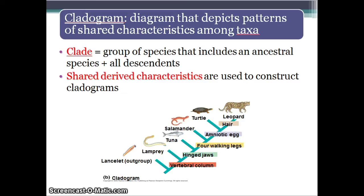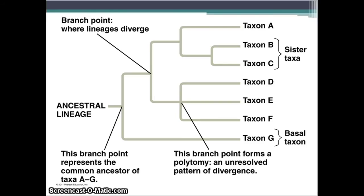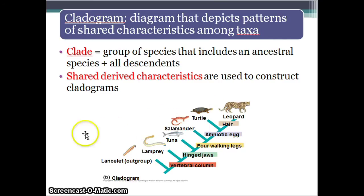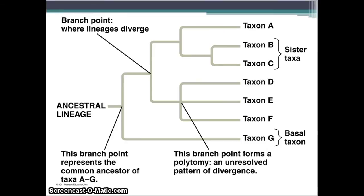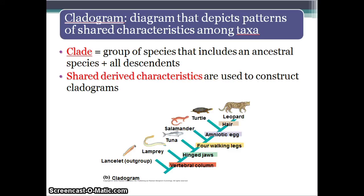Another thing we need to know is the cladogram. A cladogram is very similar to a phylogenetic tree, but drawn in a different style. It talks about a clade, which is a large group. It's essentially the same concept — a diagram showing which groups of animals belong together.